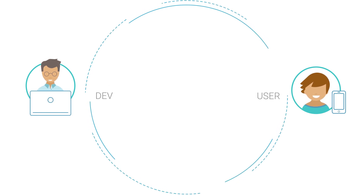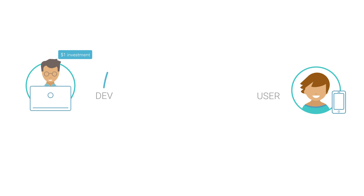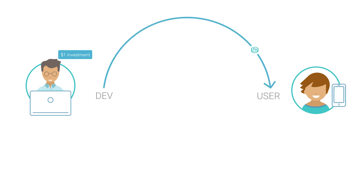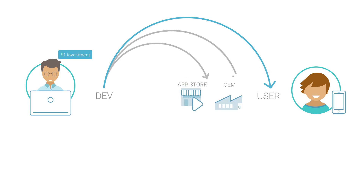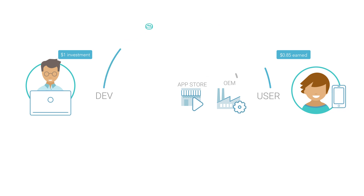Let's imagine that it all starts with an app developer investing in cost-per-install advertising. With the AppCoins model, advertising intermediaries are no longer present. The only margins deducted are for the app store and for the manufacturer. If the user installs the app, he or she will earn AppCoins that can be spent on in-app purchases.